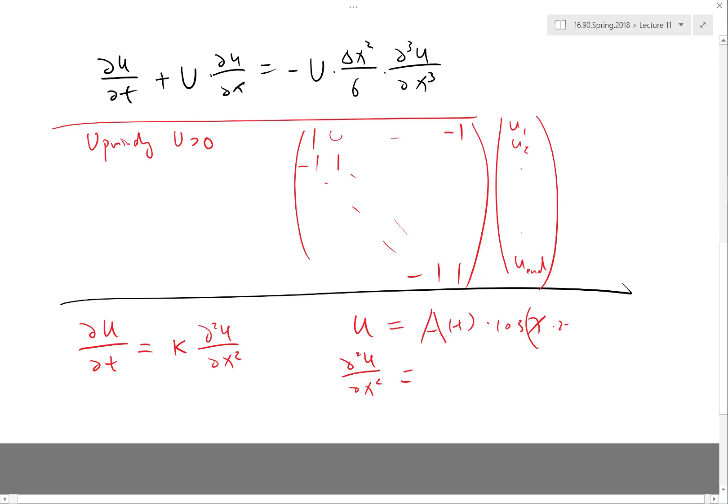Actually I have A times 2π. What's your answer? Yeah, it's actually minus cosine multiplied by the same A and 2π squared. So it's minus (2π)² times A(t) times the same cosine(x times 2π). So that means if you plug that into the PDE...